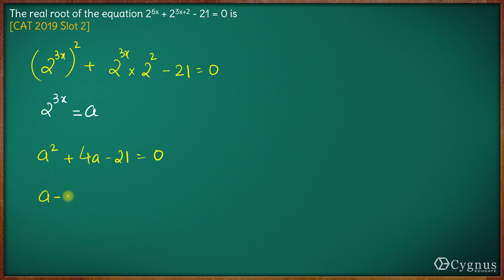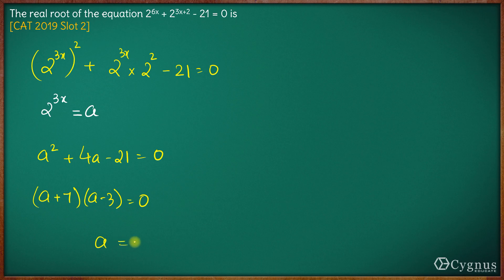Now this can be factorized as a plus 7 into a minus 3 equals 0. So this gives us a equals minus 7 or plus 3.